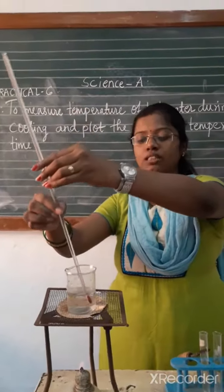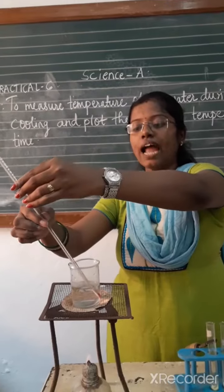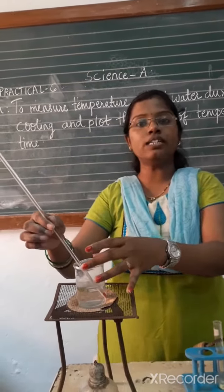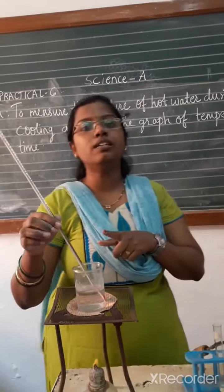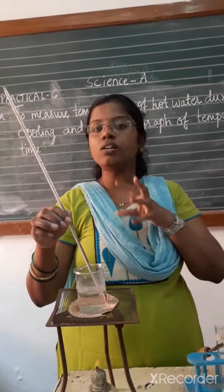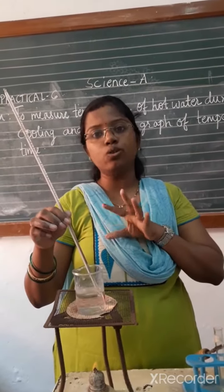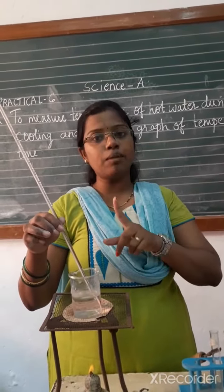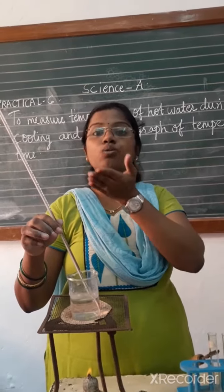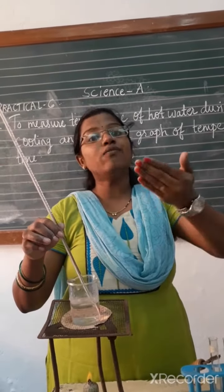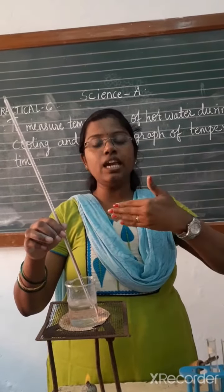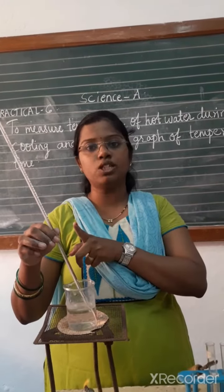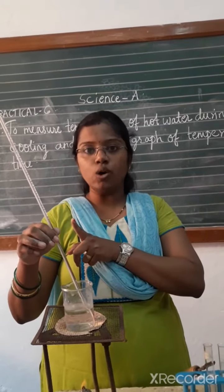Then I am going to heat this water with the thermometer placed in it. I will heat it until the water starts boiling at 100 degrees Celsius, but I need to bring the temperature down to 70 degrees Celsius, and from 70, each minute I will record the temperature difference.